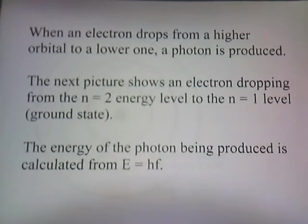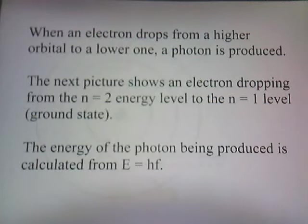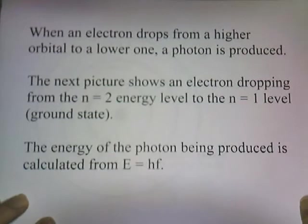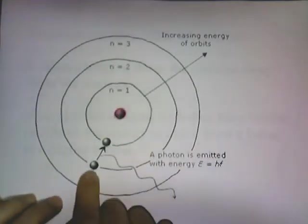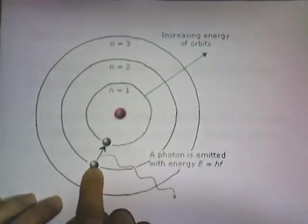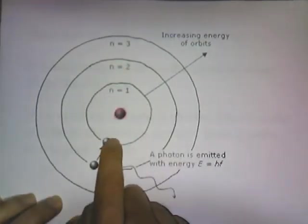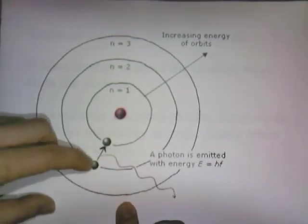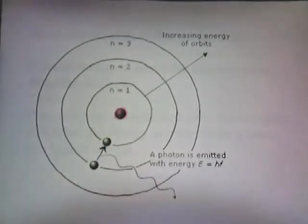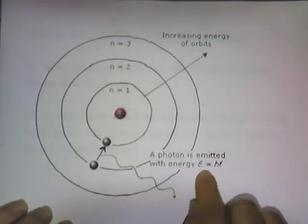When an electron drops from a higher orbital to a lower one, a photon is produced. The next picture shows an electron dropping from the n equals 2 energy level to the n equals 1 level — the ground state. The energy of a photon being produced is calculated from E equals HF. When the electron drops from a higher energy level to a lower energy level, a photon is produced, and the energy of the photon is expressed as E equals HF.